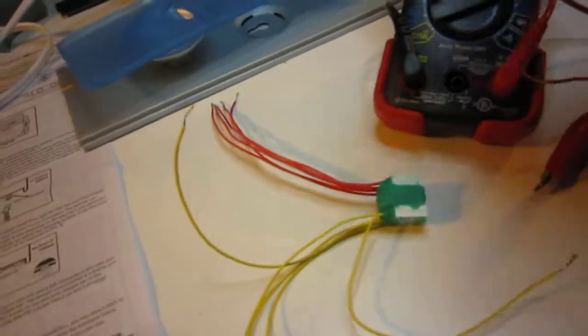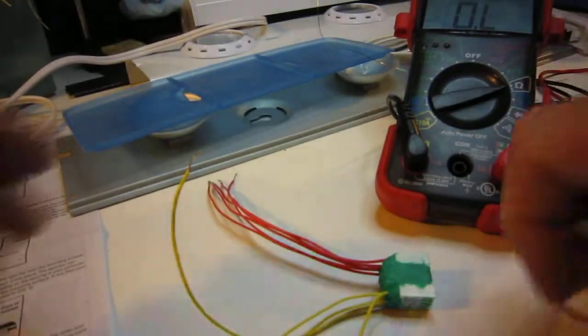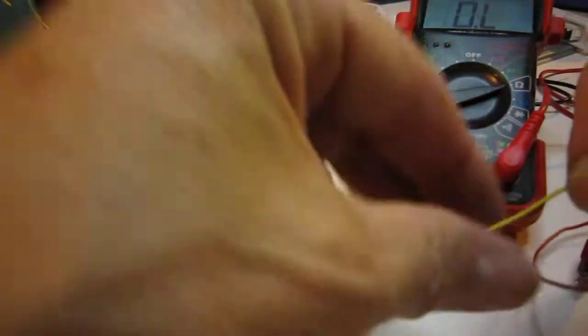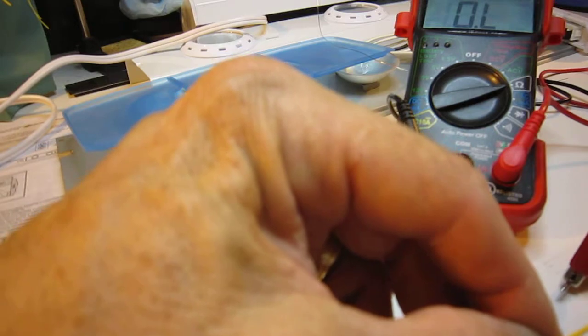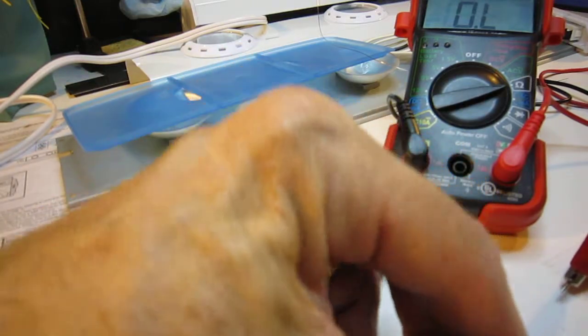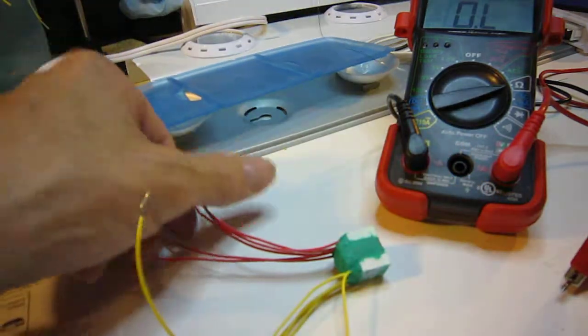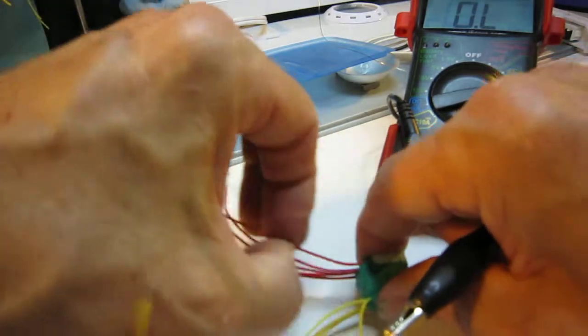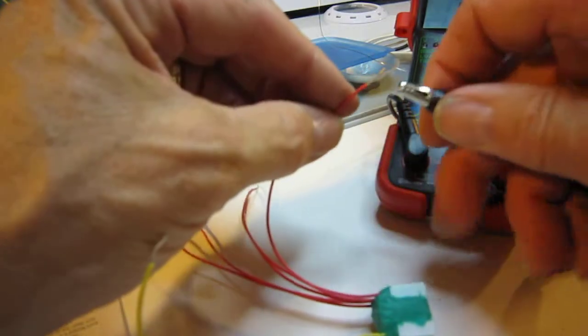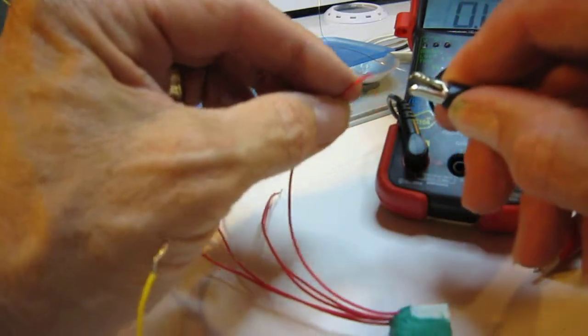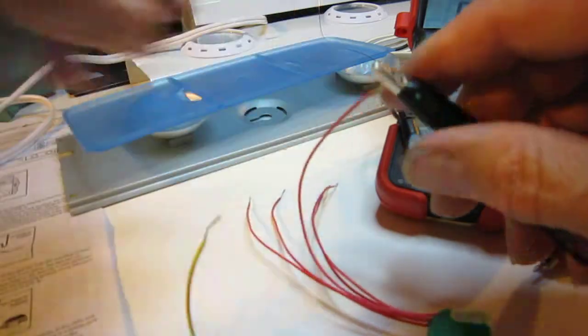Then we will connect the yellow lead to one of the probes on the multimeter, and we have to test the other wire coming out of the harness to see what we get.